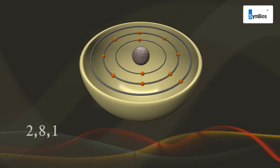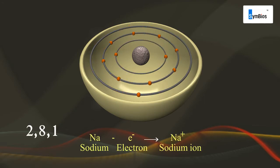Sodium atom has only one electron in its outermost shell, so it donates one electron to form sodium ion Na+.